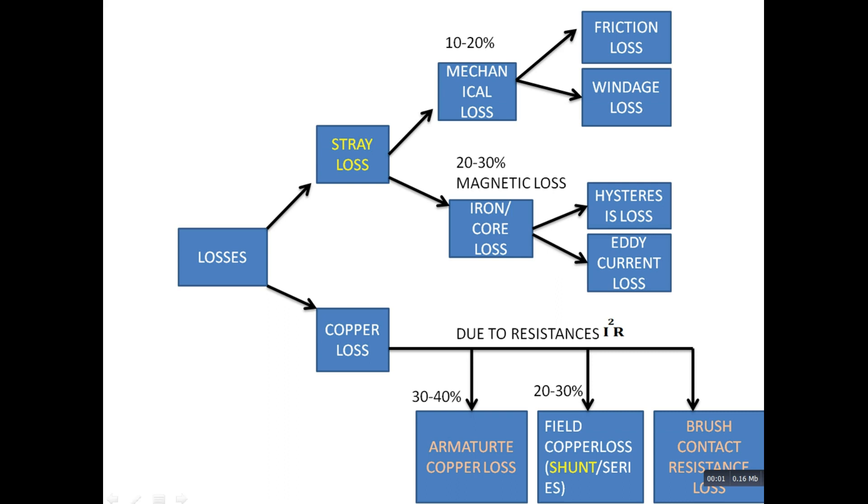Mechanical losses are 10 to 20 percent of full load losses. Iron loss is 20 to 30 percent, called core loss, and it is a magnetic loss. It can be further divided into hysteresis loss and eddy current loss.